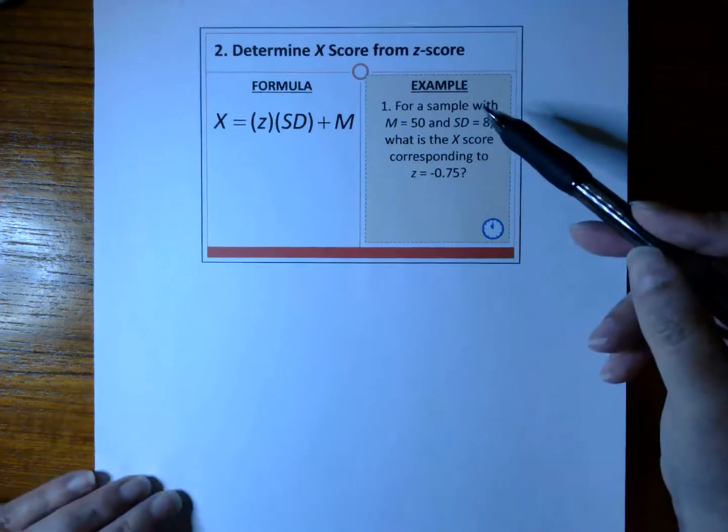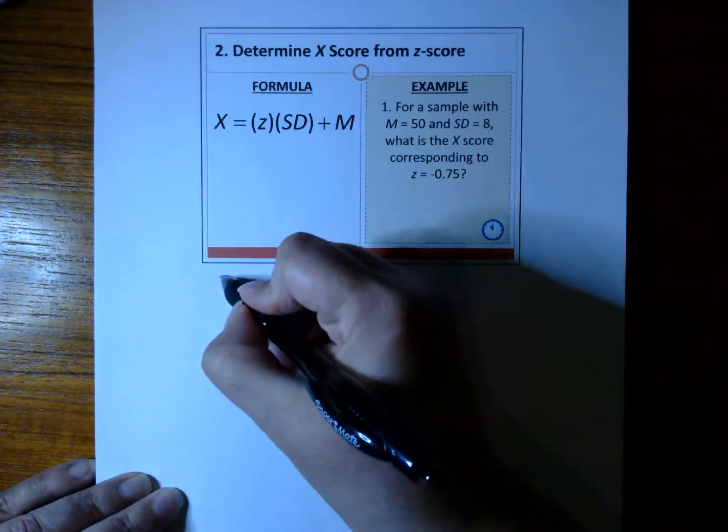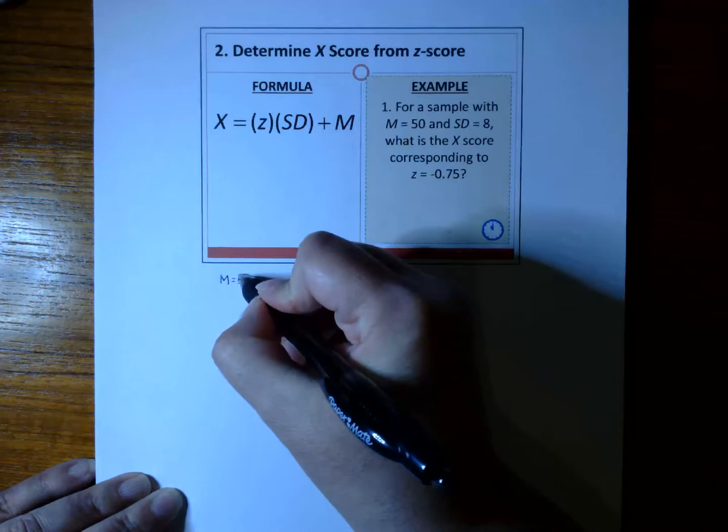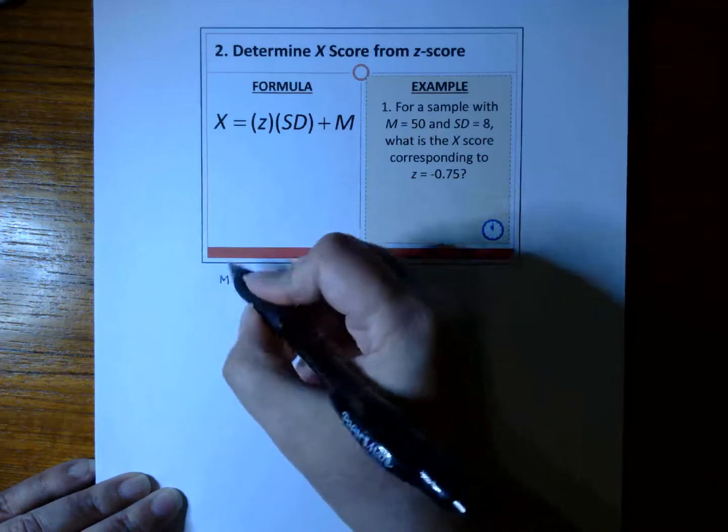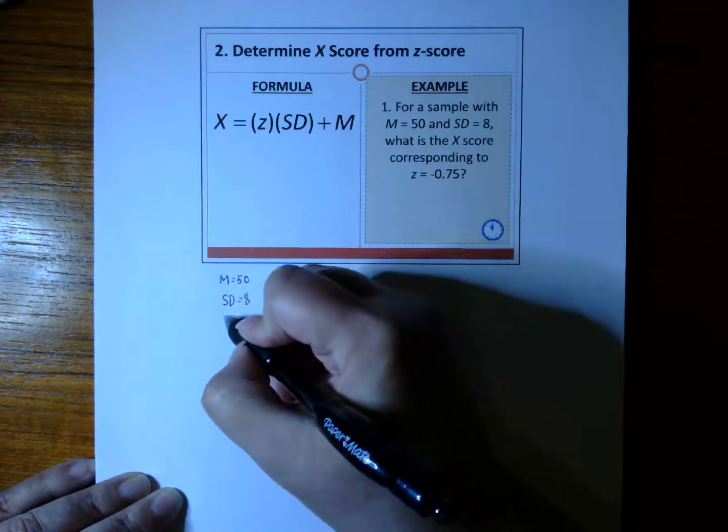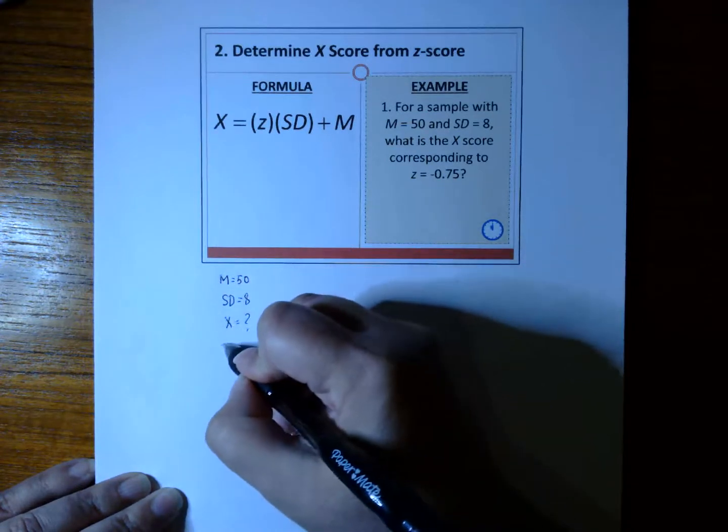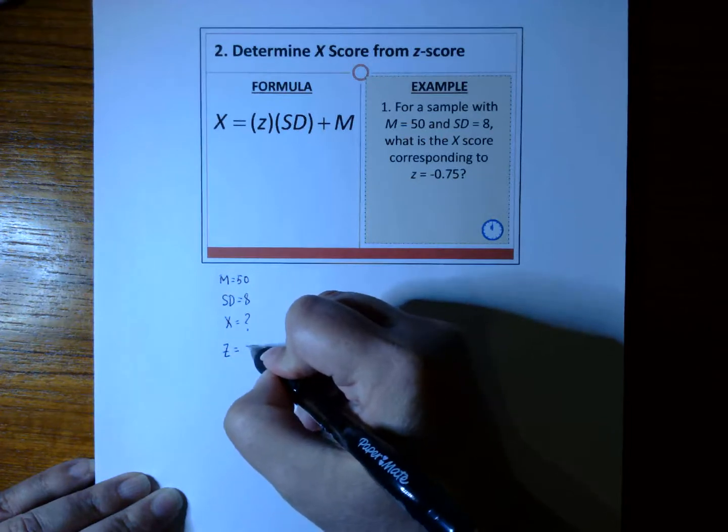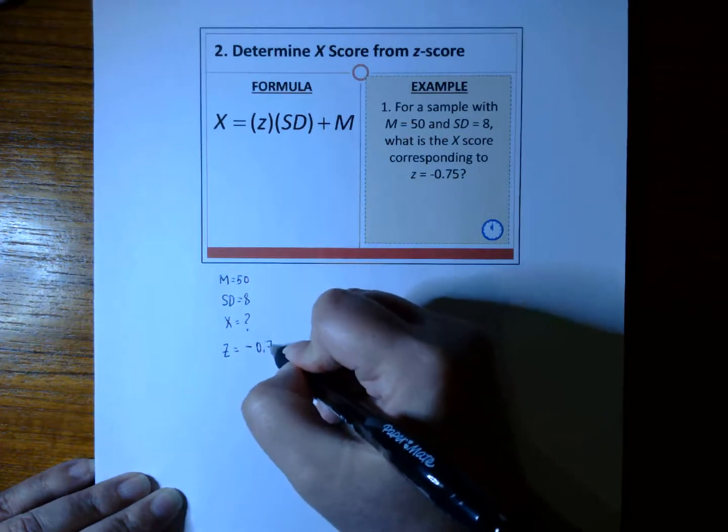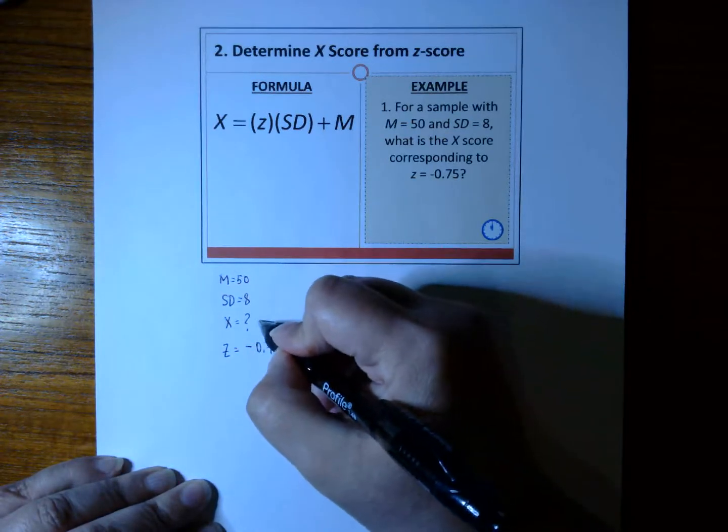Let's do this example, and remember what I said. Let's take out the important information. We have a mean of 50. We have an SD of 8. They want to know what is the X-score for a Z-score of a negative 0.75. In other words, we're solving for the X-score.